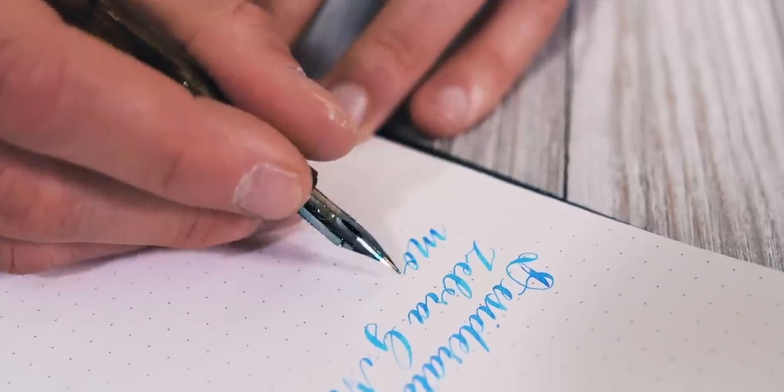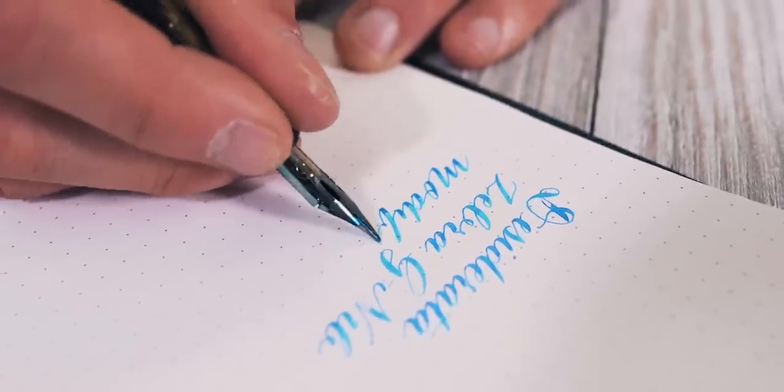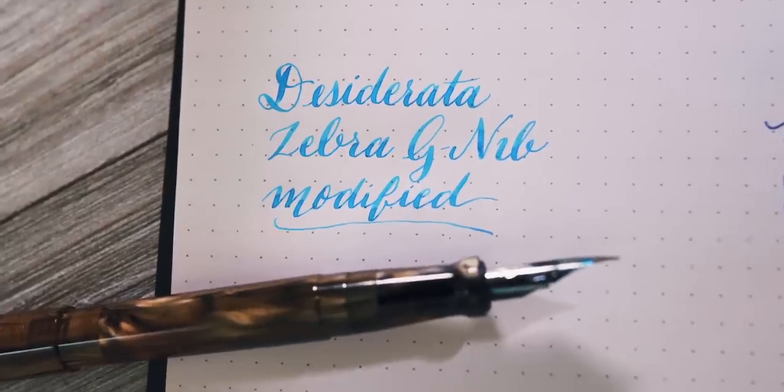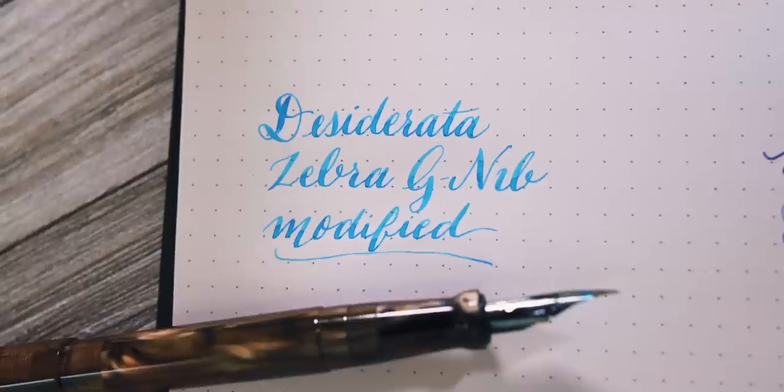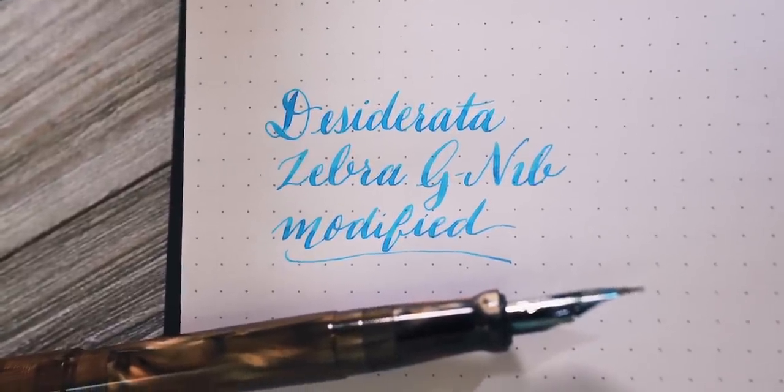The main issue with this modification is that the dip nibs are made from chrome, which reacts to prolonged exposure to ink and corrodes over time. You could expect to change out your Zebra G nib every 4 to 8 weeks. They aren't that expensive, but it's kind of a pain to have to keep swapping them.